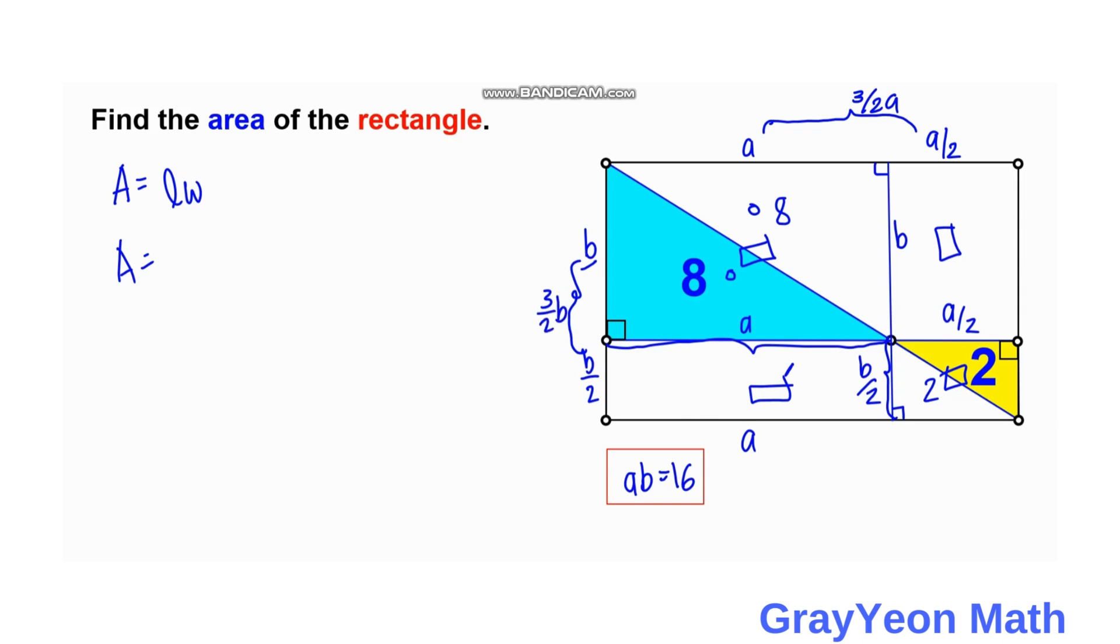And therefore, the length is 3 halves of A times 3 halves of B. And therefore, we have 9 over 4 times AB. So area is equal to 9 over 4 times 16. So divide both sides of both, either denominator and numerator by 4. Or 16 divided by 4 is 4. So 9 times 4 is 36 square units.